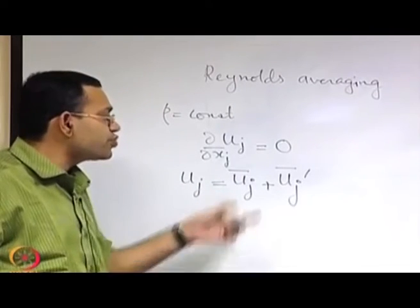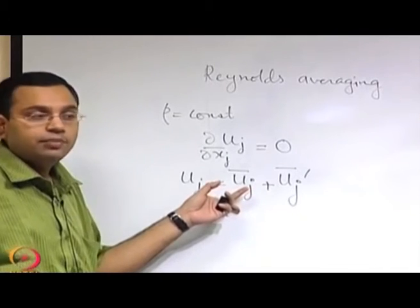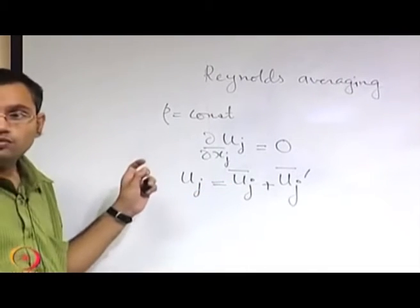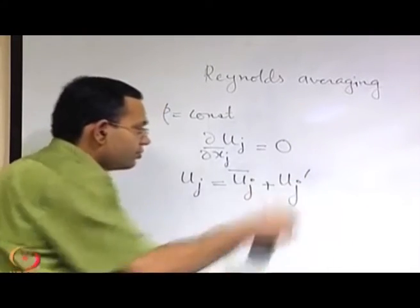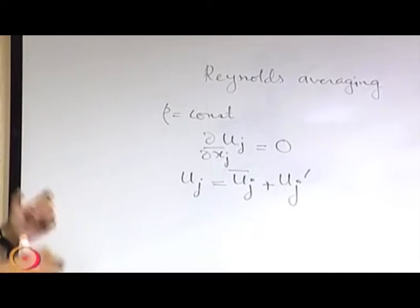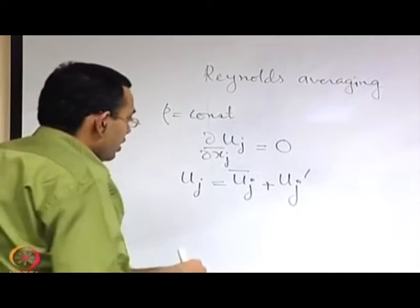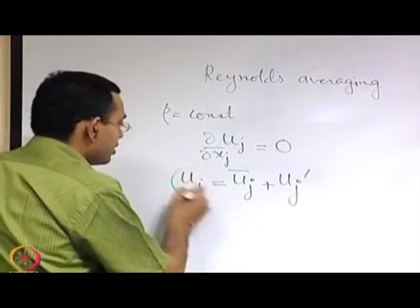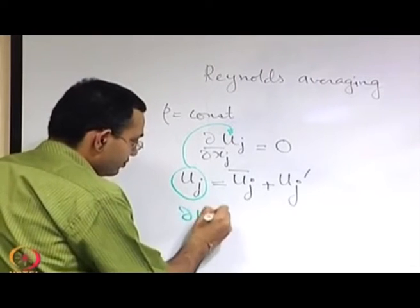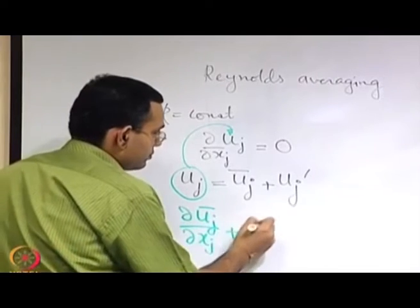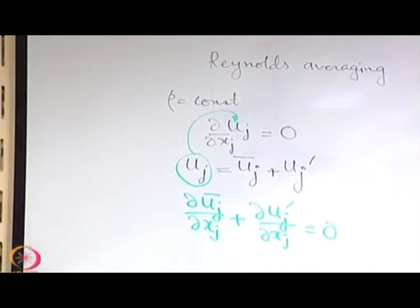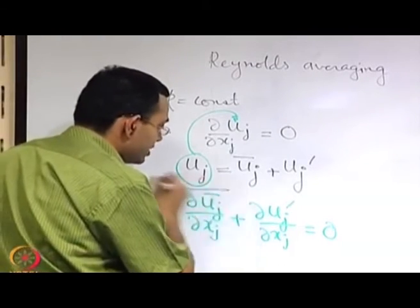When we say mean, we are not being too specific about what type of mean — it may be time average, space average, or ensemble average — we are just dealing with some sort of averaging that will give rise to equations in terms of average quantities. The way we derive the equations is straightforward: we substitute u_j in the continuity equation and average each of the resulting terms.